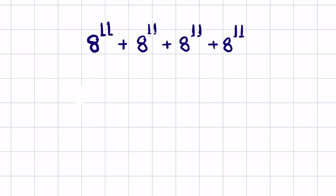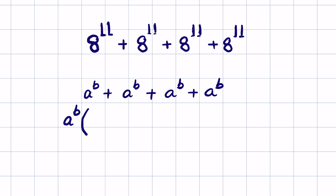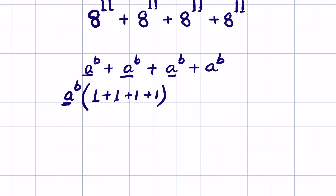This is in the form of a raised to the power b, plus a raised to the power b, plus a raised to the power b, plus a raised to the power b. We take a raised to the power b as common. Each remaining term divided by a raised to the power b equals 1, so we get 1 plus 1 plus 1 plus 1. So we take 8 raised to the power 11 as common and write 1 plus 1 plus 1 plus 1.